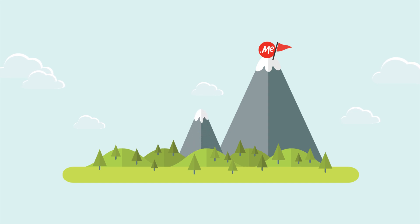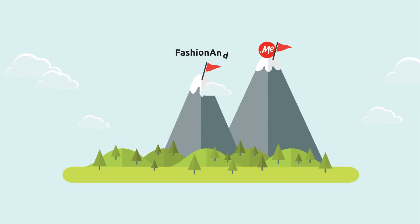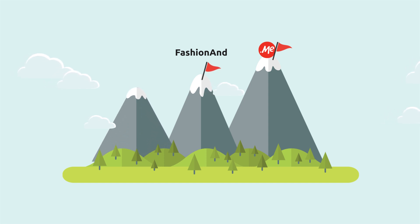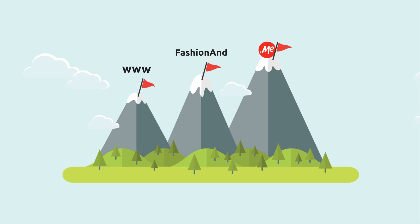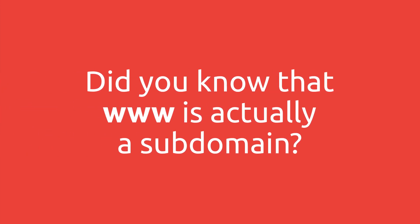Left to the TLD is fashionand, which is strategically combined with a .me domain extension to create a clever call to action. Fashionand is called a second-level domain. Finally, in most cases, your web address starts with www. Did you know that www is actually a subdomain? Or that you can change it?